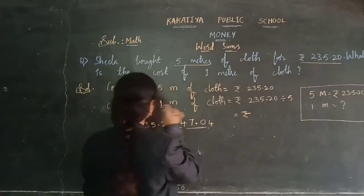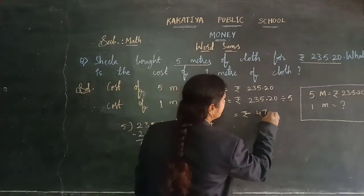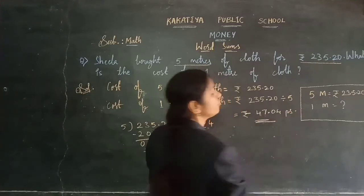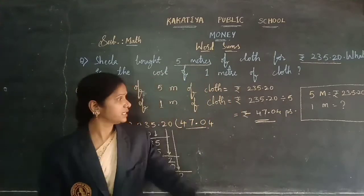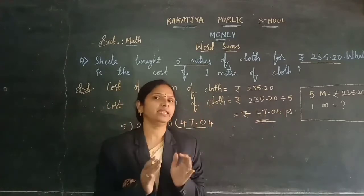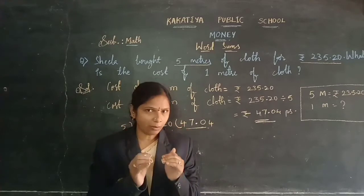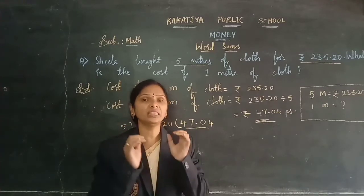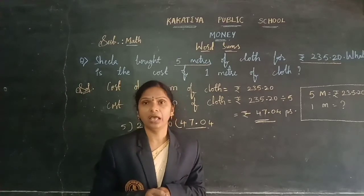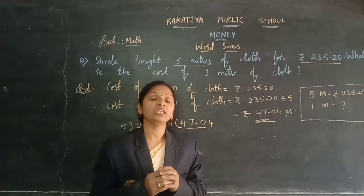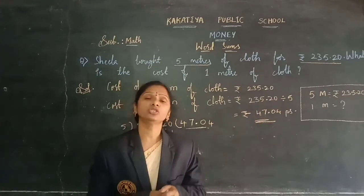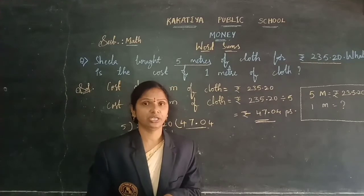The cost of 1 meter of cloth is 47 rupees 04 paise. Keep in mind, children: whenever one amount or one thing's cost is given and we are finding the more things value, you need to do multiplication. And when more things value is given and we are finding the one thing value, like this problem, you need to do division.